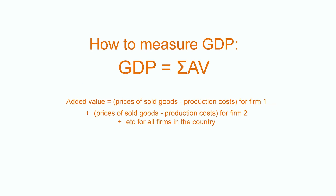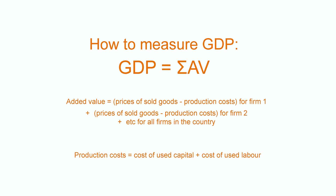So, how can we measure GDP? A first way is to add up all the income of all the producers in the country — this is the nation's income. Companies produce value added. Value added is the difference between the inputs of production and the prices of sold goods. The inputs of production are typically capital and labour. The added value of companies is the increase in value of the nation's economy. GDP is then equivalent to the sum of all the value added of all the companies based in the country.